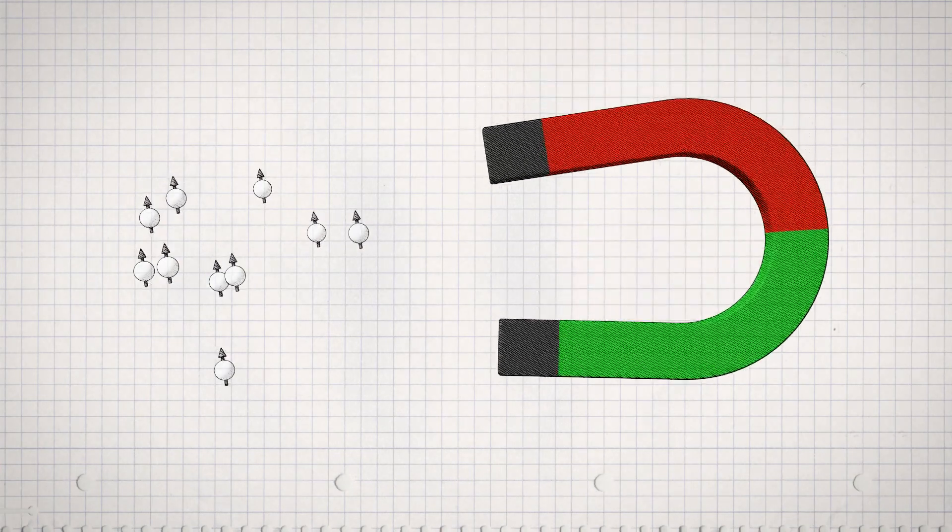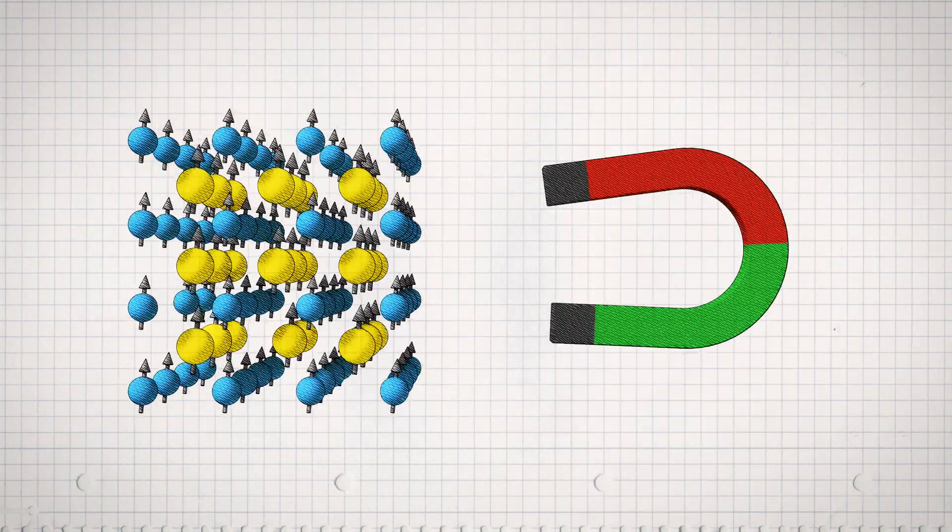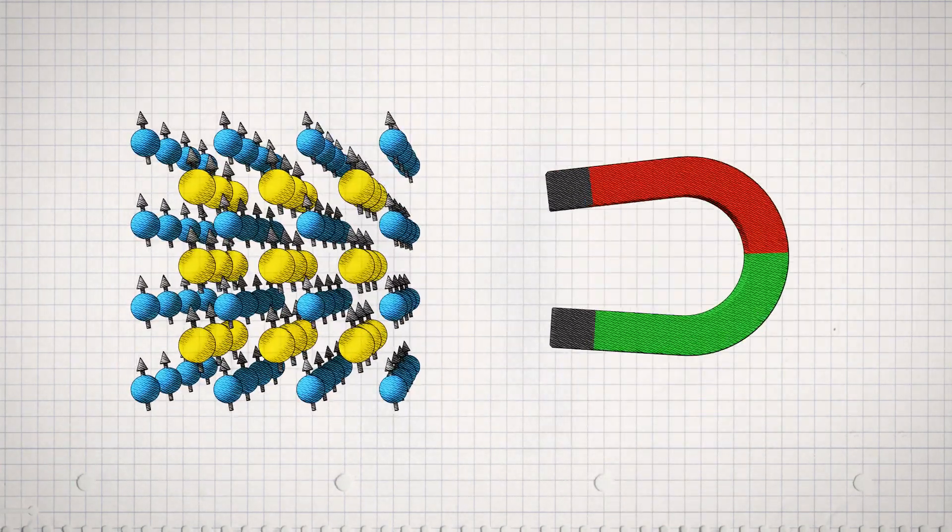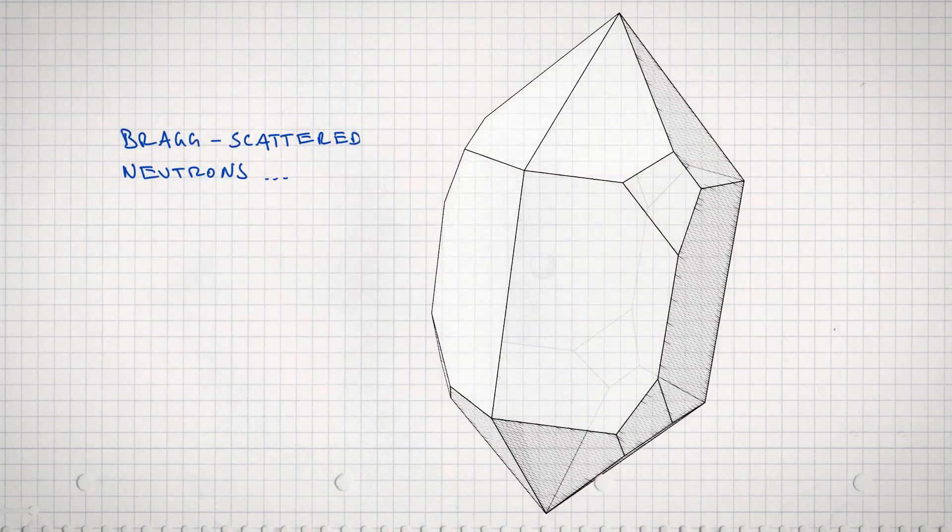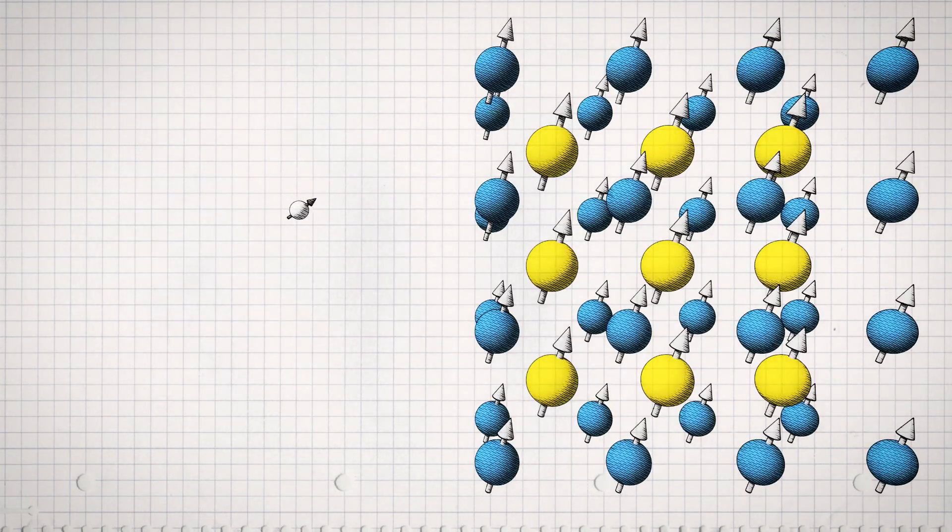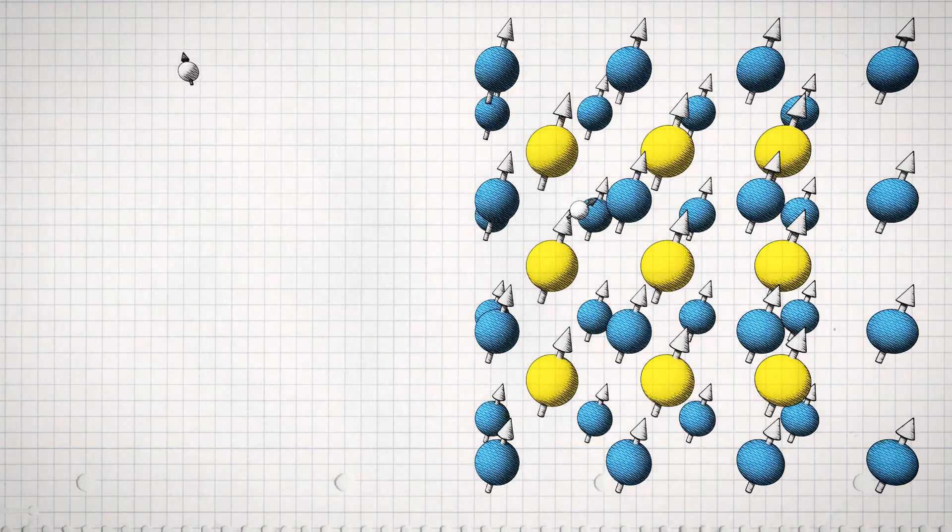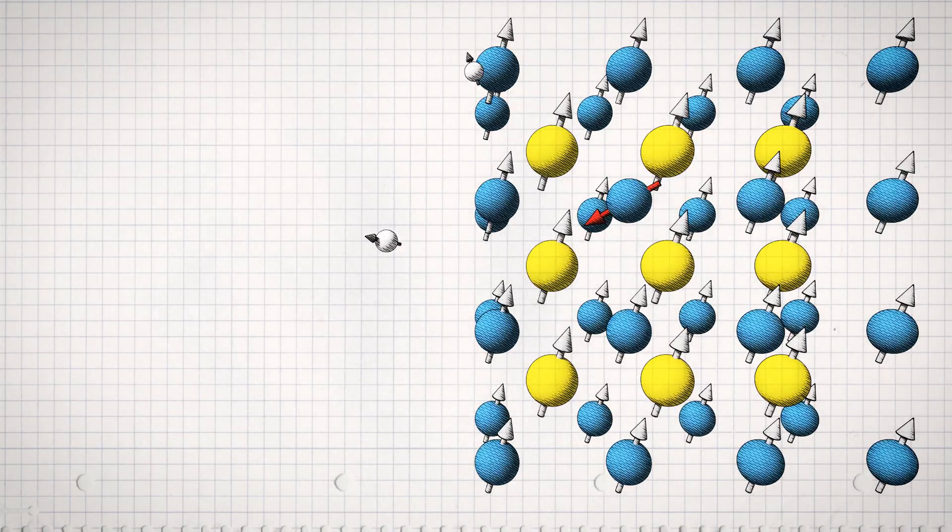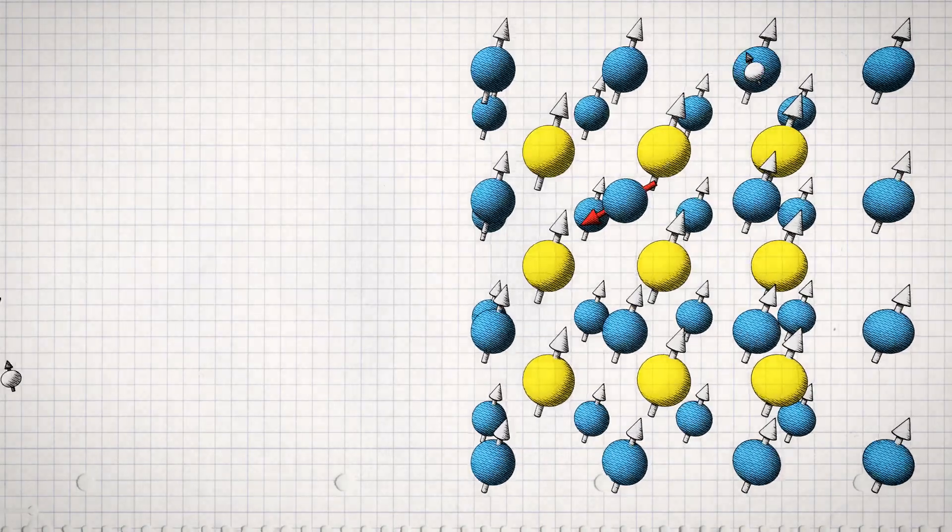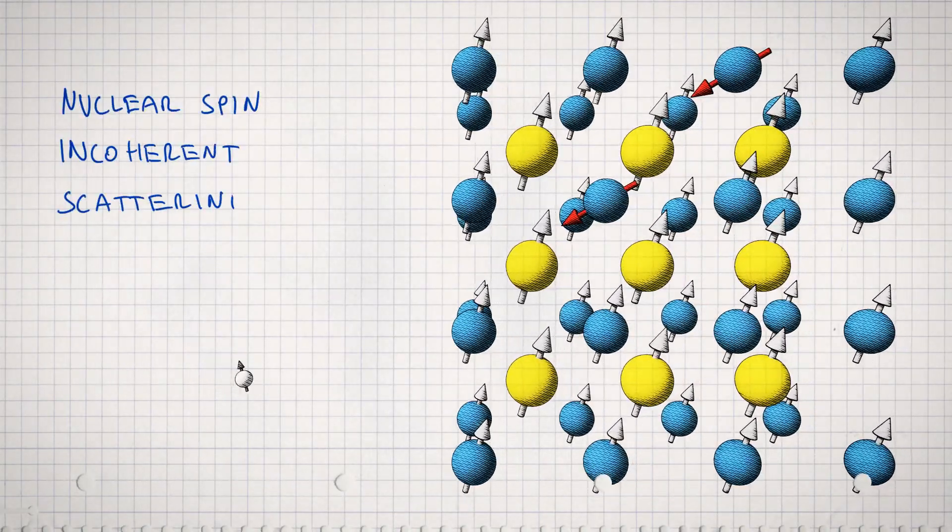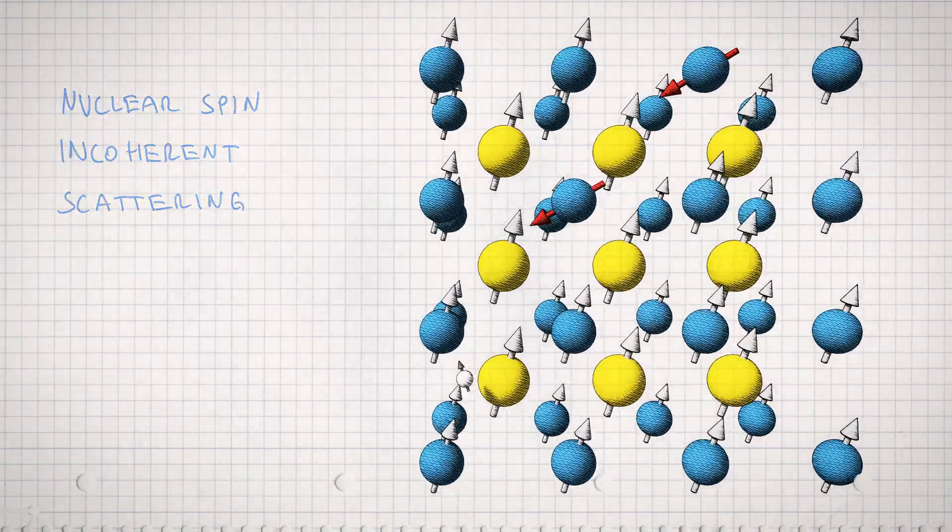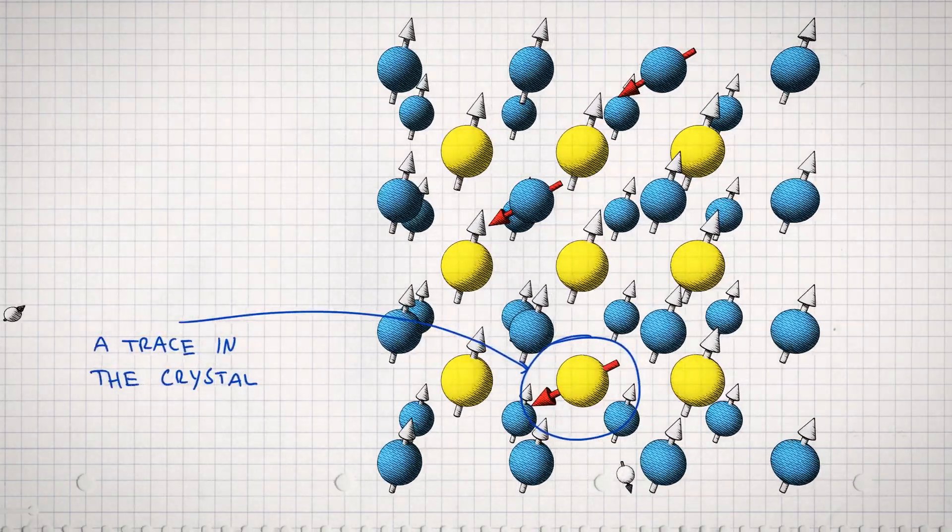All neutrons have a property called spin. So have most atomic nuclei. While Bragg scattered neutrons leave no trace in the sample, other neutrons will cause a change in the crystal, for example through spin interaction. This causes the memorably named nuclear spin incoherent scattering. These transitions do leave behind a trace at that particular lattice site.